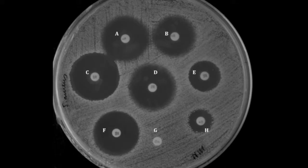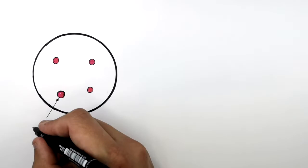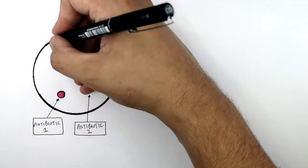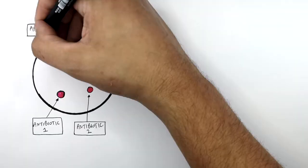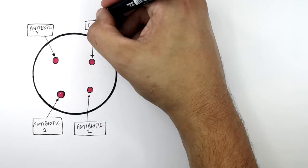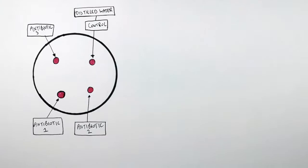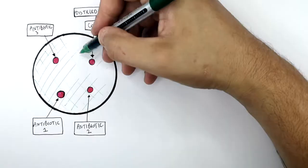G has no zone of inhibition and we're going to explain why. This is an agar plate with no bacteria and no antibiotic discs on it. I've now added four discs. This disc contains antibiotic 1; this disc contains antibiotic 2, which is different to antibiotic 1; this disc contains antibiotic 3, which is different to 1 and 2; and this is the control, which has no antibiotics — instead it has distilled water or nothing at all. The colonies spread on the agar plate represent the bacteria.